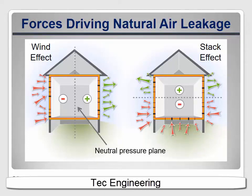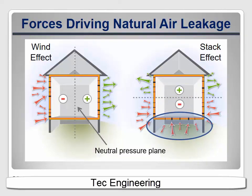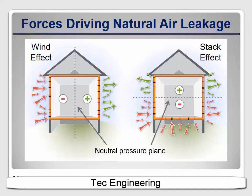The warm air rises and creates a positive pressure at the top and pushes out of any openings. This creates a suction at the bottom of the house that draws cooler air in through openings down low. Again, there's a neutral pressure plane that divides the two, but this time it's horizontal. This stack effect also doesn't happen all the time. It's highest in the winter, when it results in the biggest energy penalty, but it doesn't happen much at all in the warmer months. So there are significant periods through the year when these natural leakage forces don't do much to ventilate the house.